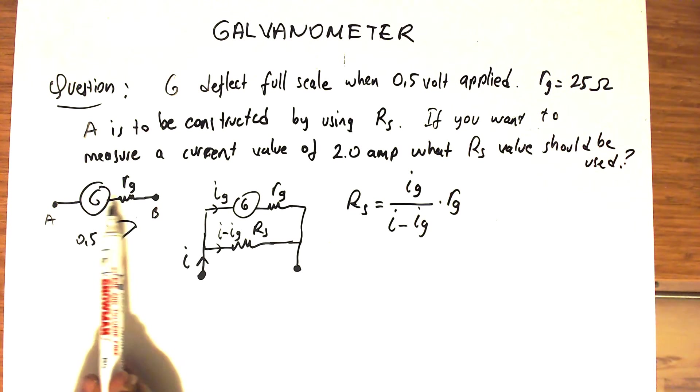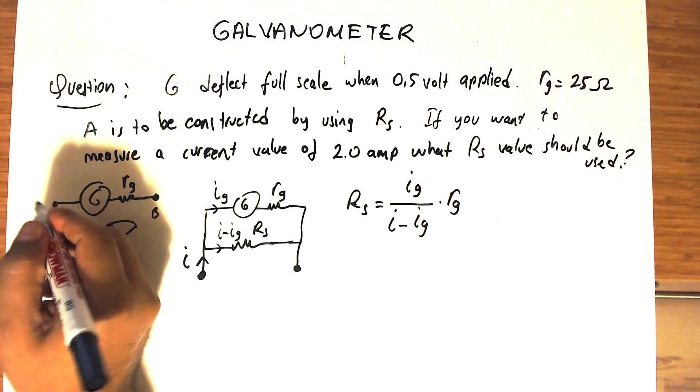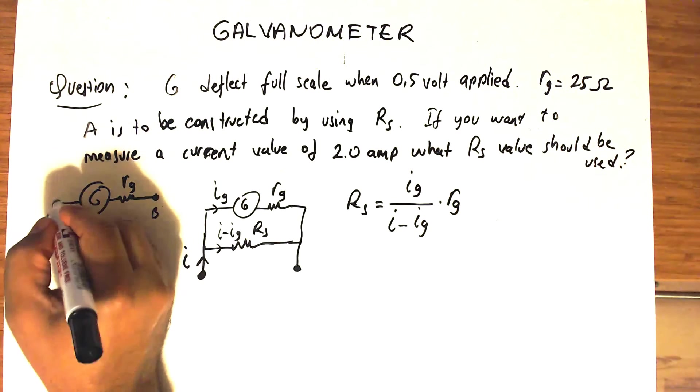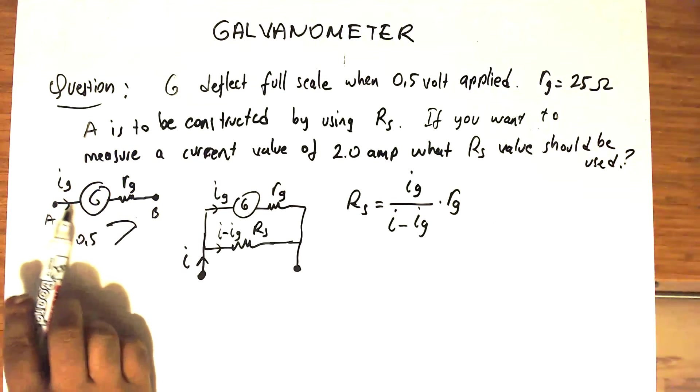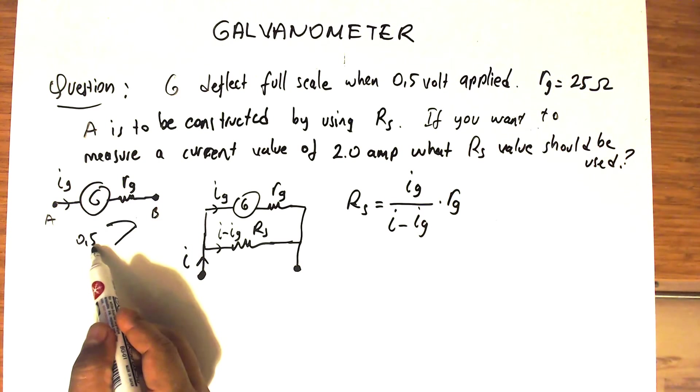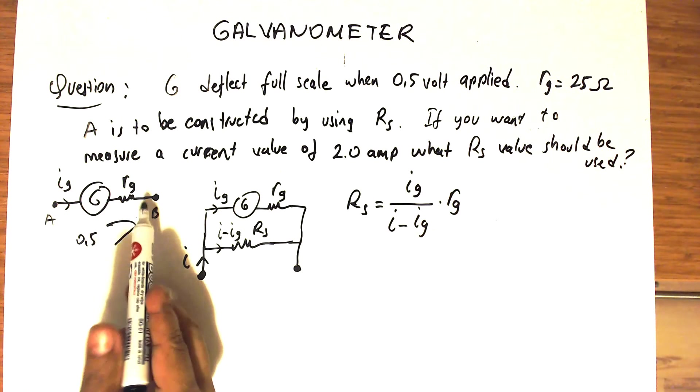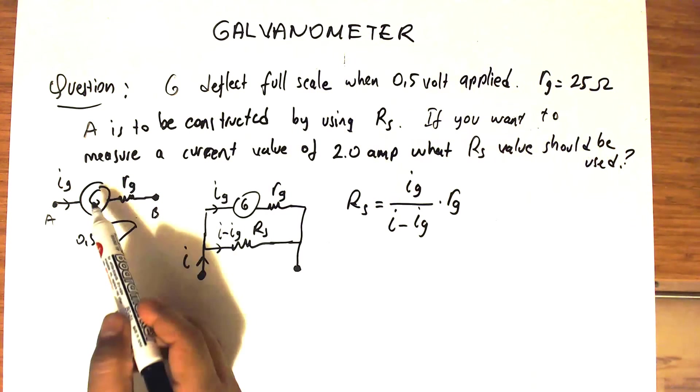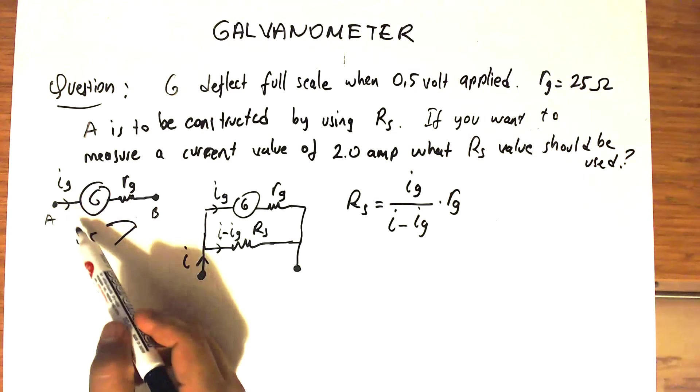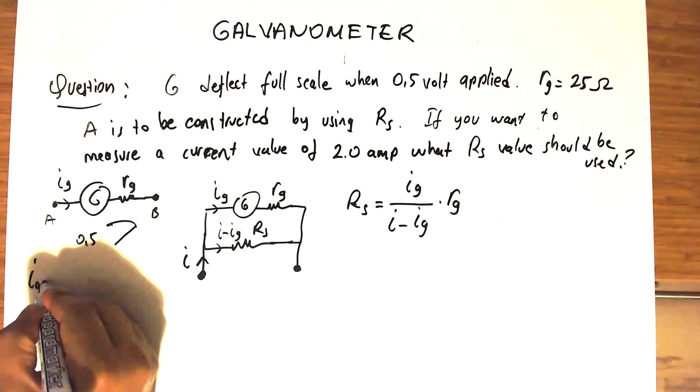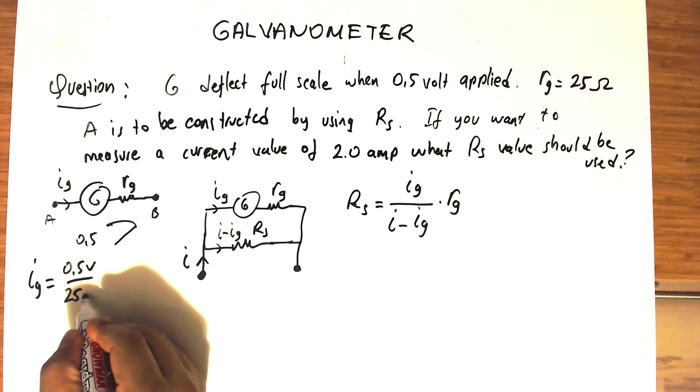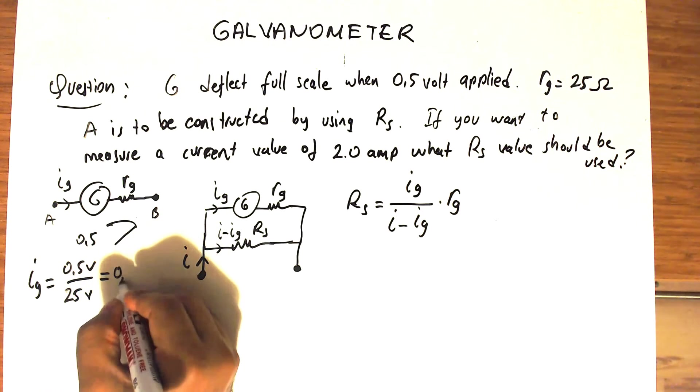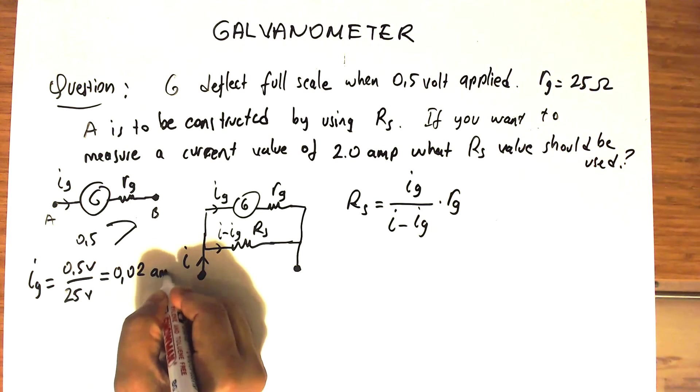This information is if you apply 0.5 volts through the galvanometer terminals, the galvanometer deflects to the full scale. That means at full scale the current that flows through the galvanometer is ig. If we have 0.5 volts between a and b and 25 ohms resistance, then you can figure out what ig is by using Ohm's law.